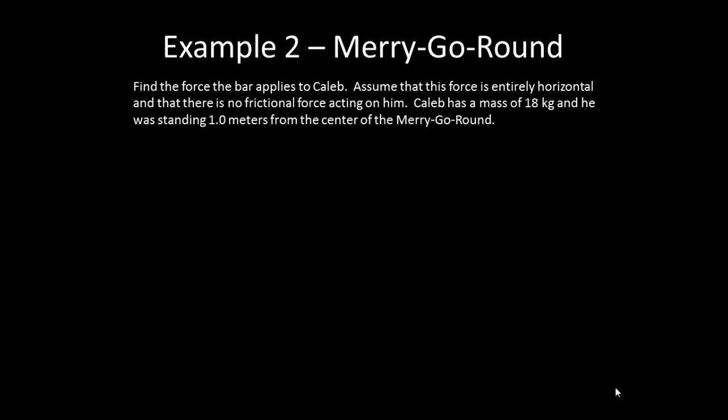All right, so if we think about the steps given, the first step is to write down what you are trying to find. So we are looking for the force the bar applies to Caleb. You also might want to write down the things that you know. In this case, I gave you that the radius was 1 meter, the mass was 18 kilograms, and you should have found that the period, the time for 1 revolution, was about 4 seconds.